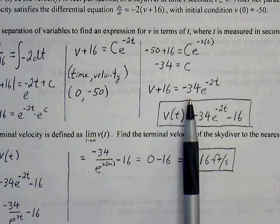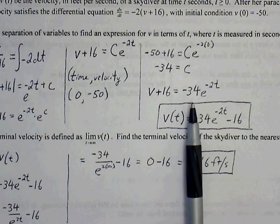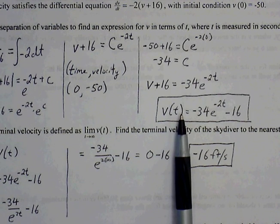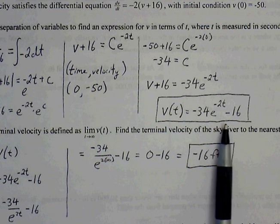Now we can plug that into our general equation and solve for v. So v plus 16 is equal to negative 34 times e to the negative 2t. Solve for v. We get negative 34e to the negative 2t minus 16.